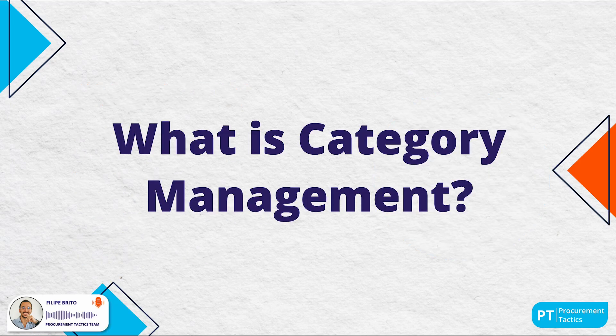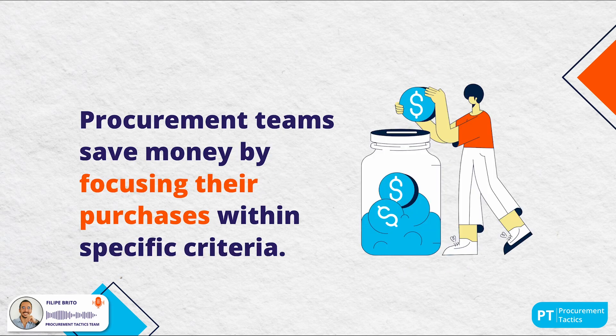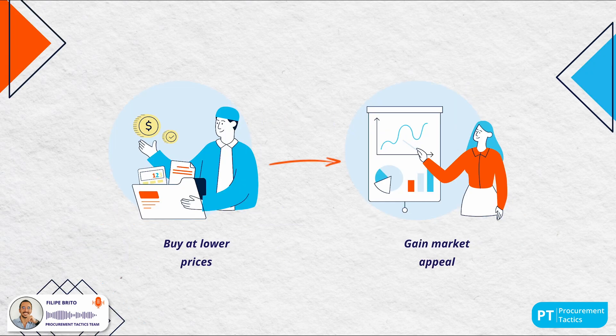So what exactly is category management? Simply put, businesses use this approach to break down their overall spending into similar types of products. But zooming out, it's a complex strategy category managers use to zero in on suppliers, products and markets, gaining impactful insights in a detailed but straightforward way. In category management we bundle items at their basic level, saving money by focusing purchases within specific criteria. It helps companies buy at lower prices, giving them a competitive advantage, and segments goods and services into groups based on their function and type.